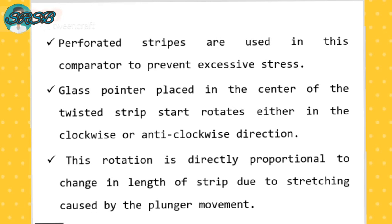The glass pointer placed in the center of the twisted strip starts to rotate either in the clockwise or anticlockwise direction. This rotation is directly proportional to the change in length of the strip due to stretching caused by the plunger movement. The plunger movement is based on the surface appearance of the component.